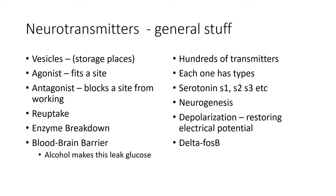Another thing we need to think about is neurogenesis — that is, how do or do nerve cells grow? Also, what happens if a nerve cell becomes depolarized — that is, the electrical potential is drained from it. One thing that seems to happen with long-term alcohol use is that some nerve cells lose their polarity and they can't produce an electrical potential. If the person stops drinking and stays sober for a long time, then that nerve cell tends to repolarize, though not every nerve cell might.